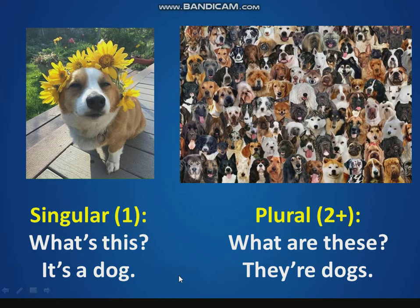For singular, we use 'this.' For plural, 'these.' I say, you repeat. What's this? It's a dog. What are these? They're dogs.